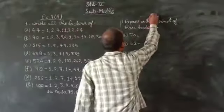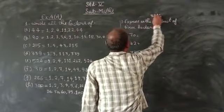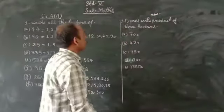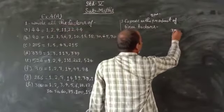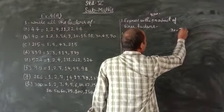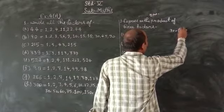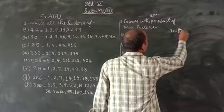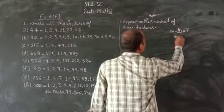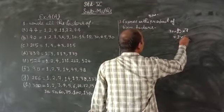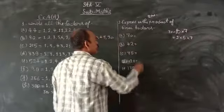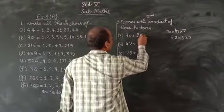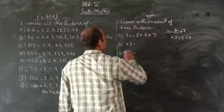Now, question number 2. Express as the product of three factors. 70 can be expressed as: 70 equals 10 times 7, which are the factors 2 multiply 5 multiply 7.